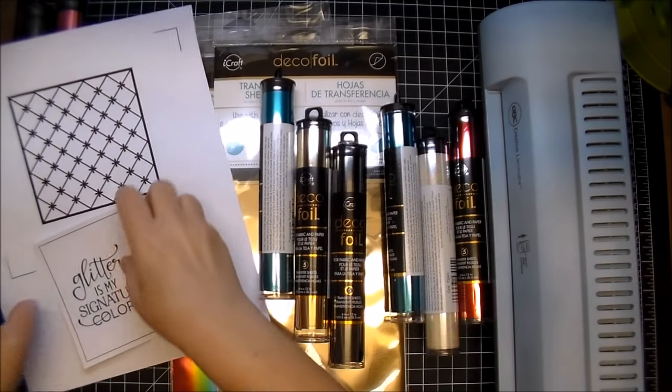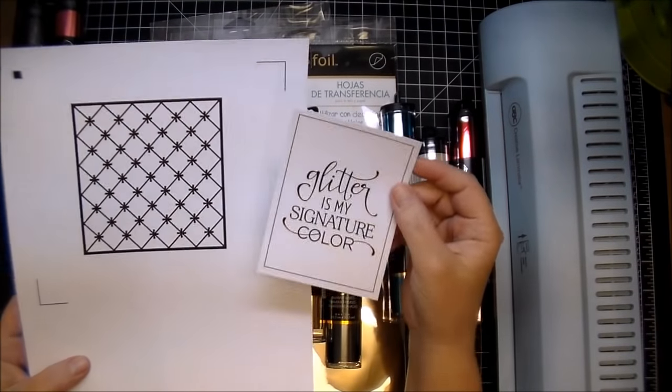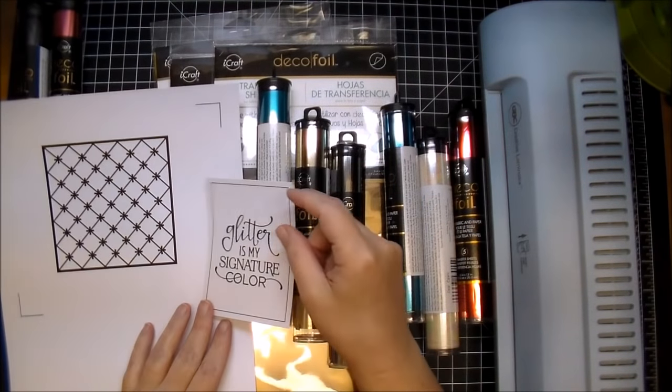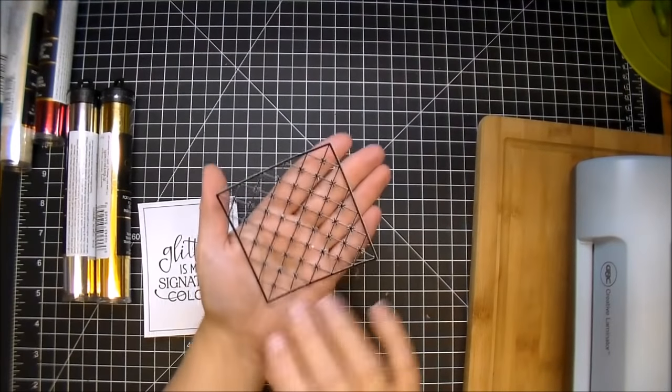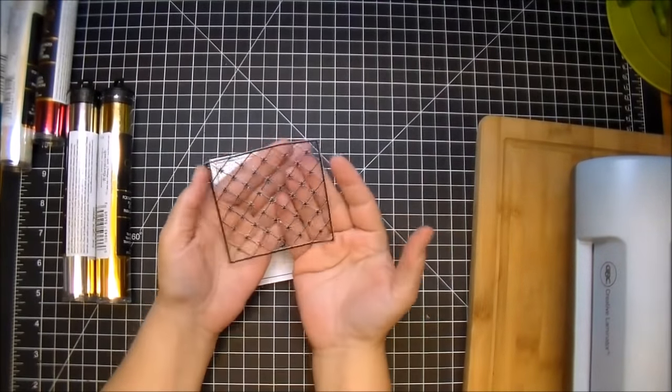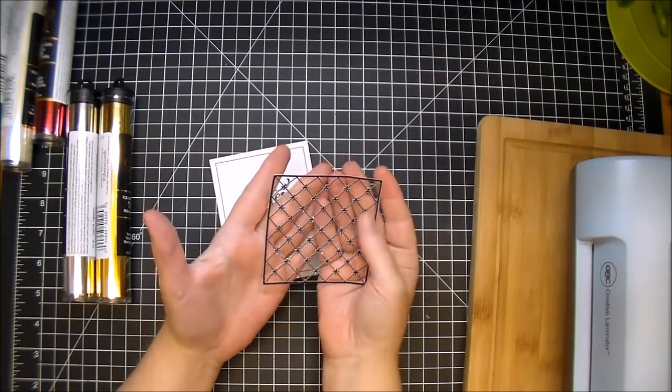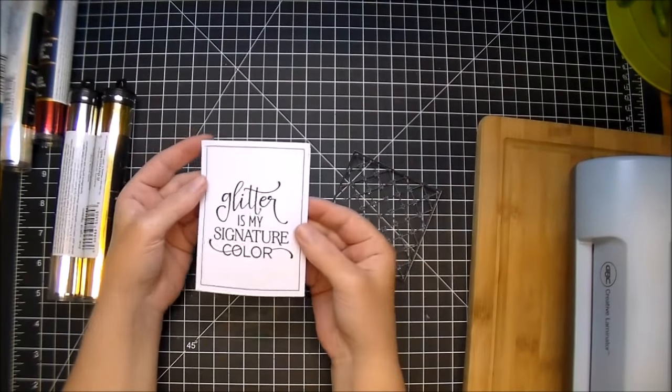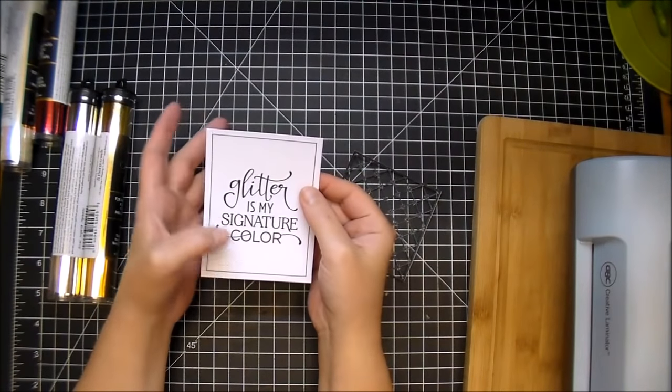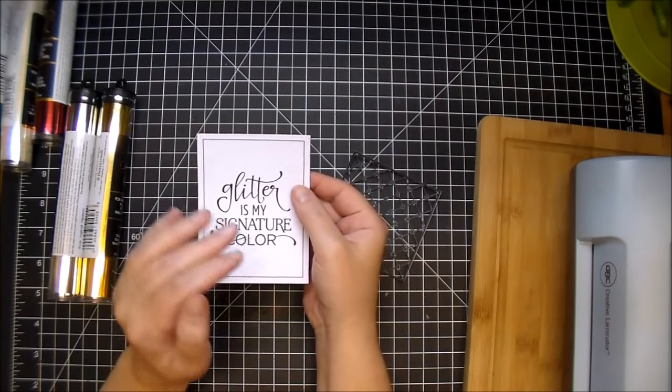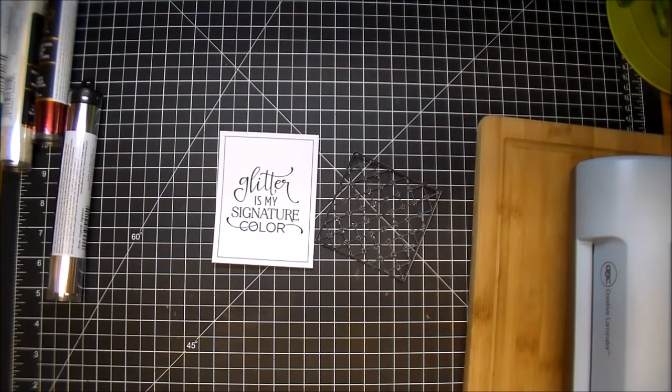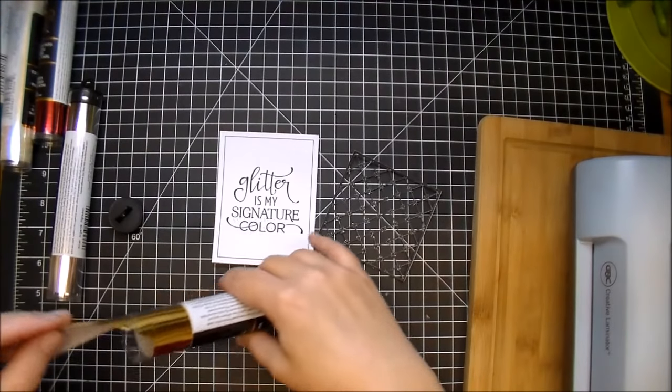So let's just start with the simple ones here. Again, just to reiterate, these have been printed from the laser printer. I cut this out from my Cameo and this is a really delicate die. When you run it through the hot laminator, it will reactivate that laser printer, it's a powder, it'll reactivate that and the foil will stick to it.